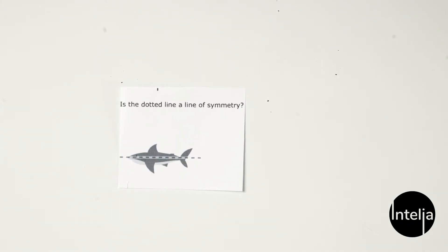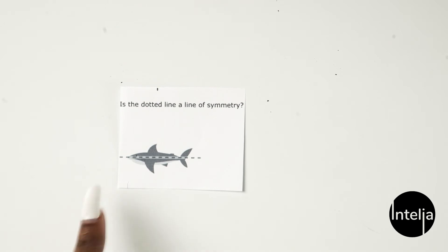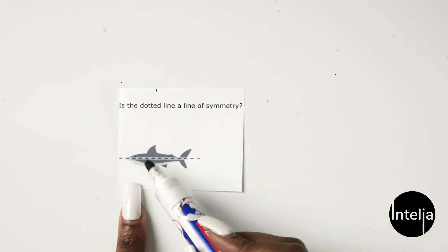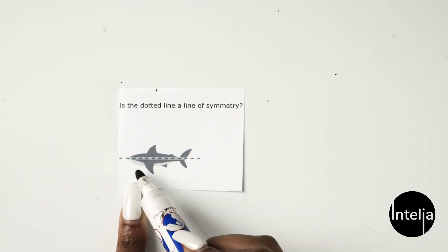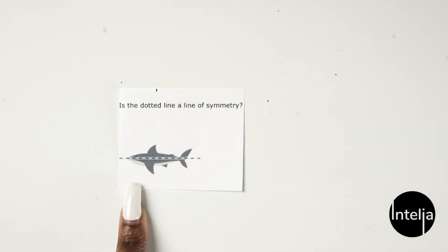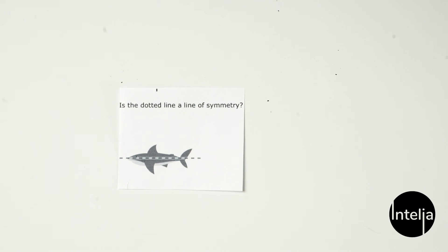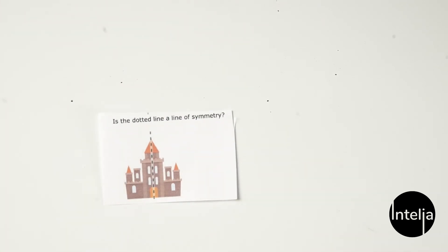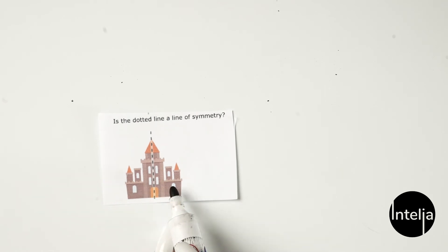Moving on to the next example — is this a line of symmetry? Nope, it's not. Because you have this white belly part of the shark and we don't have that on the other side. Now let's look at the castle — is this a line of symmetry? It looks like it is, because everything I have on the left, I have on the right. So this is definitely a line of symmetry.